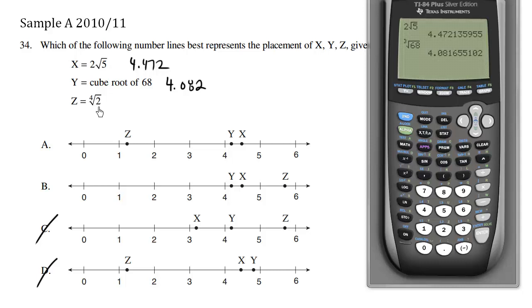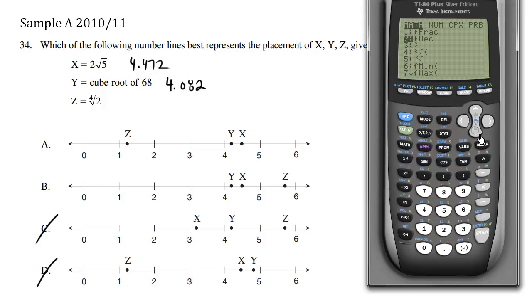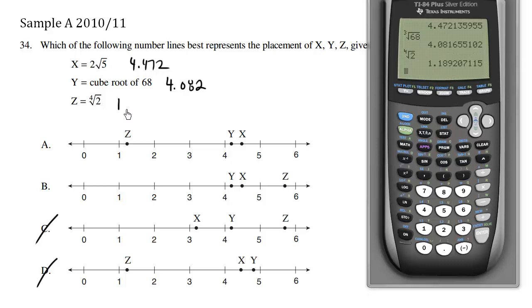And finally, z equals the fourth root of 2. So I'm going to type in math and I'm going to go down to this little x symbol where the index of the radical symbol is x. And I'm going to actually press clear, 4 is the index, type in 2, press enter, 1.19. So this is approximately 1.189, and for z to be there, we see the answer must be A.